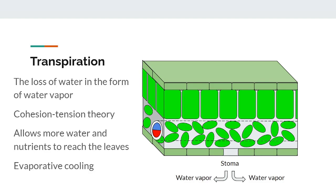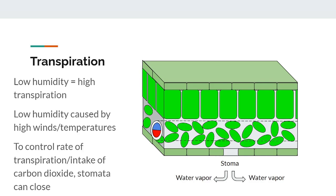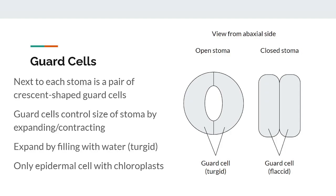The rate of transpiration is mainly controlled by the relative humidity of the air outside of the leaf. If the relative humidity is low, which can be caused by high winds or high temperatures, the rate of transpiration increases. In order to prevent too much transpiration, or to stop intaking carbon dioxide during the night when no photosynthesis is occurring, stomata have the ability to close. Next to each stoma are a pair of specialized cells called guard cells, which control the size of the opening and how much gas can get through. Guard cells are crescent or kidney shaped and are the only type of cell in the epidermis that contain chloroplasts. When guard cells are turgid — filled with water — the stoma is open, and when guard cells contract by losing water and becoming flaccid, the stoma is closed.